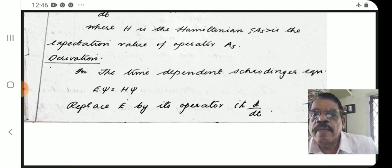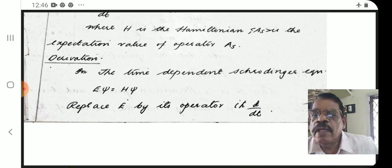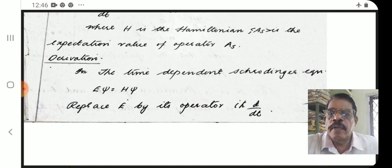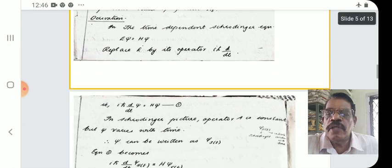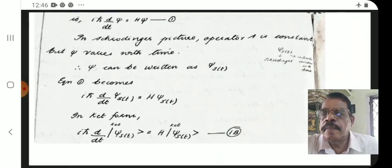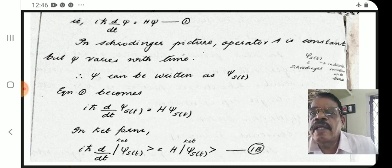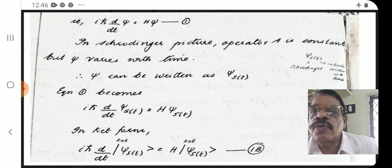Derivation: We start with the time-dependent Schrödinger equation. The time-dependent equation is E·psi = H·psi, or H·psi = E·psi. Replacing E by its operator form gives E = iℏ ∂/∂t, so we write iℏ d/dt psi = H psi, which is equation number 1.